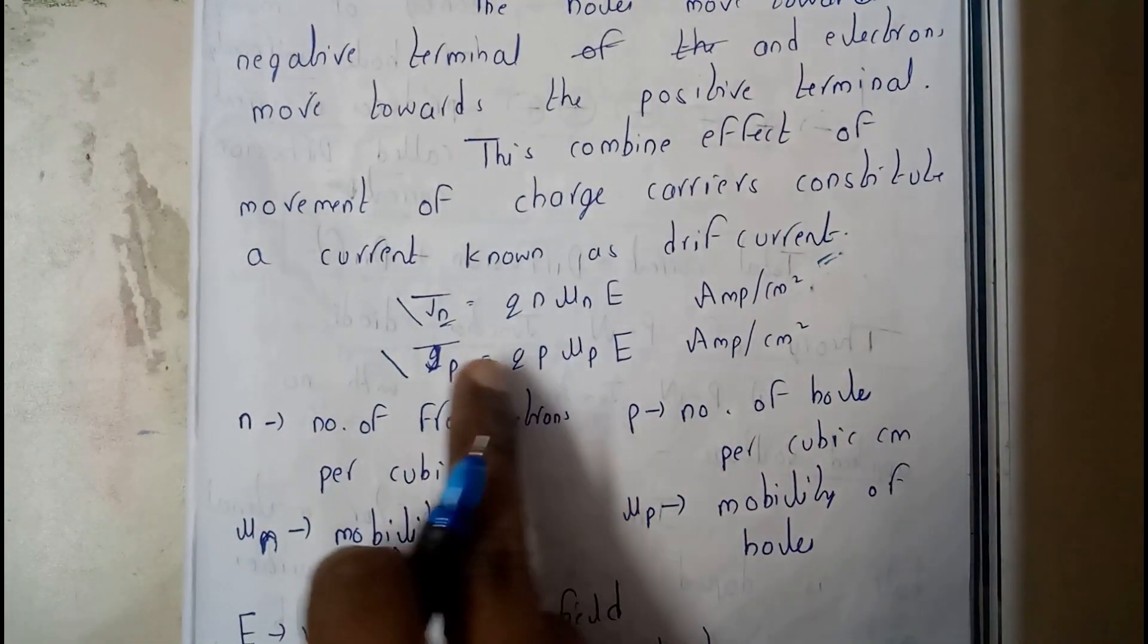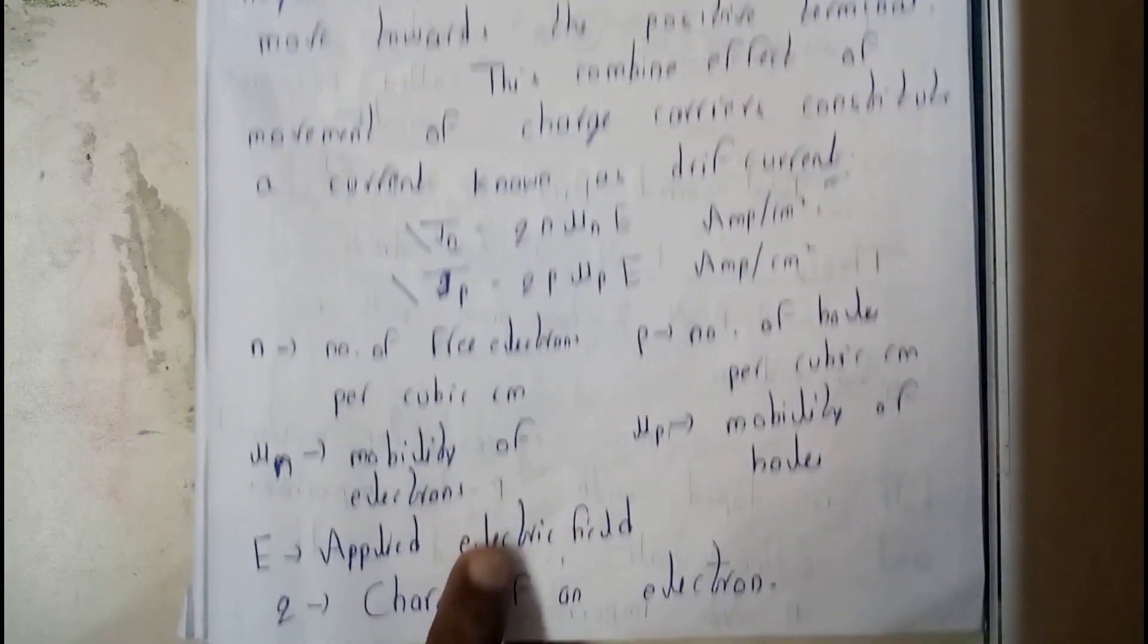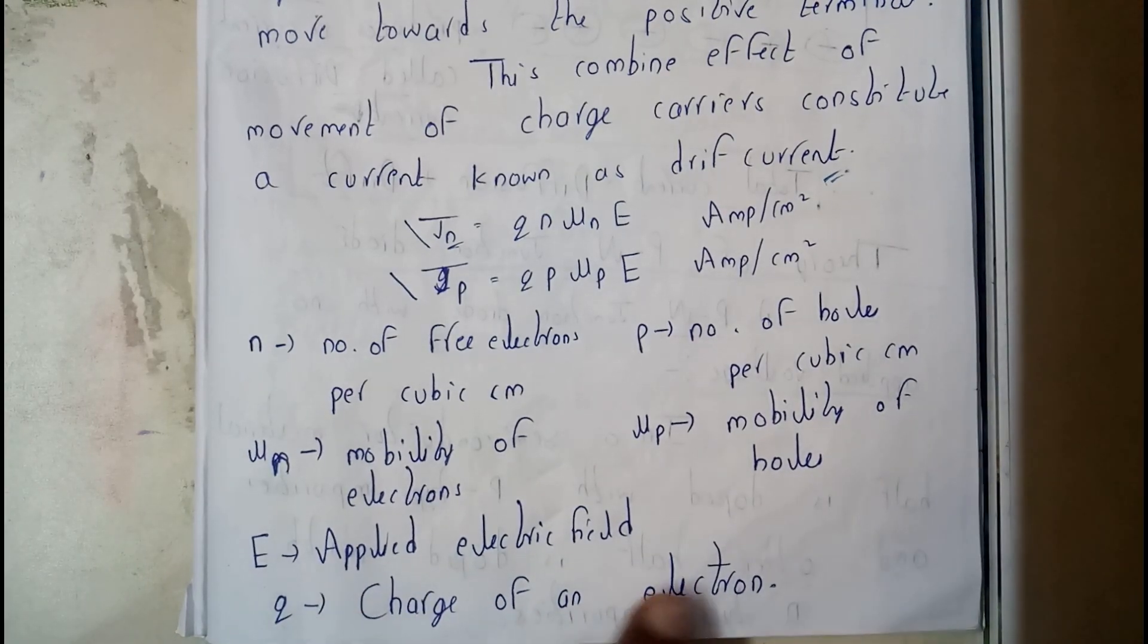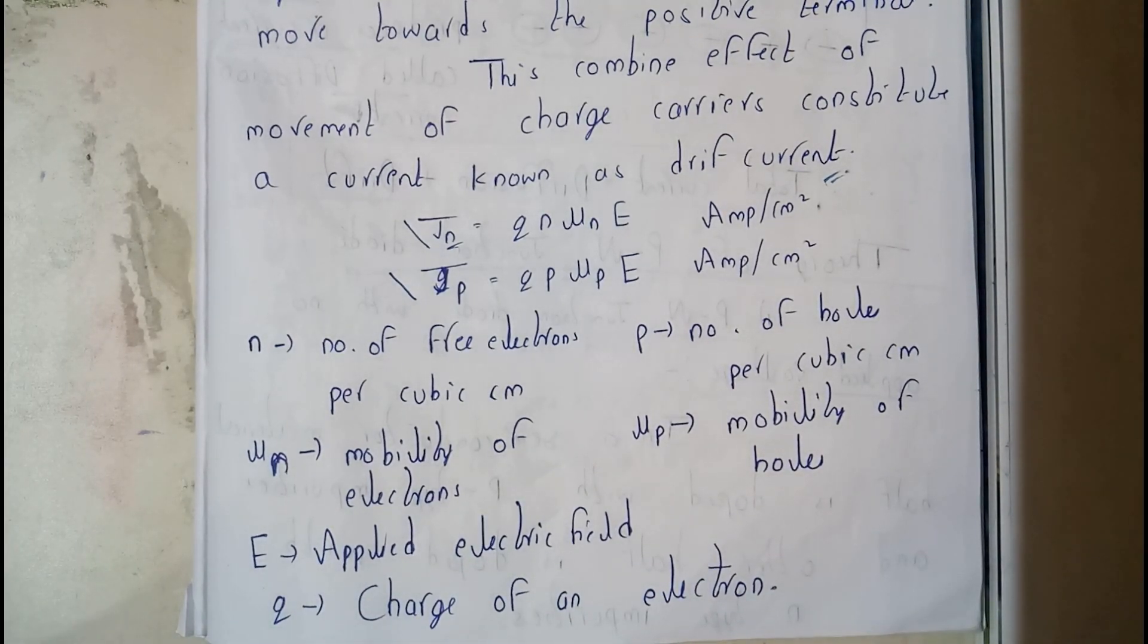U_N is the mobility of electrons, U_P is the mobility of holes, E is the applied voltage, and Q is the charge.